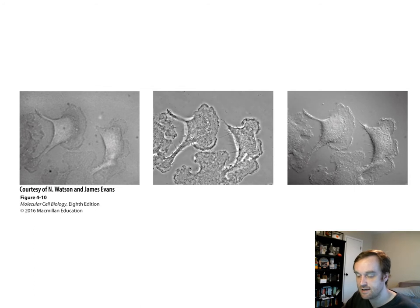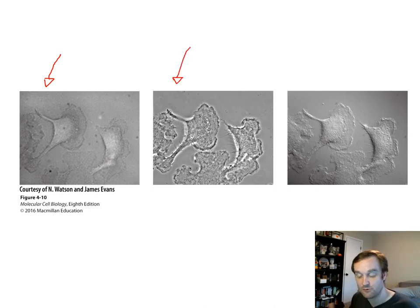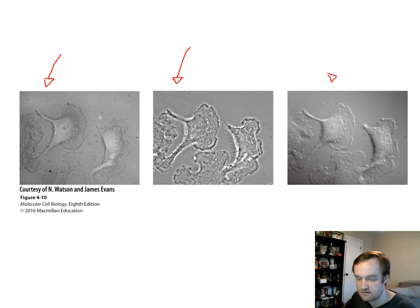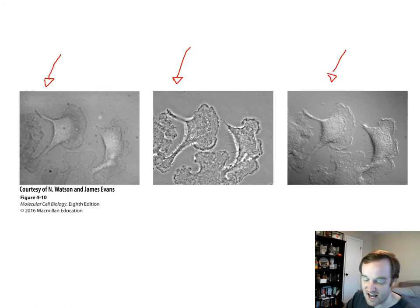Looking at the same cells imaged with three different techniques: brightfield gives a decent but somewhat fuzzy image; phase contrast, by modifying the wavelength by one quarter and recombining images, provides more contrast and resolves finer structures; and differential interference contrast microscopy gives more of a cell surface image, as opposed to the penetrating phase contrast images.